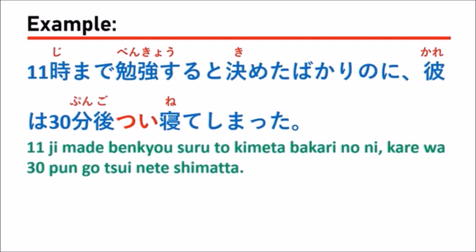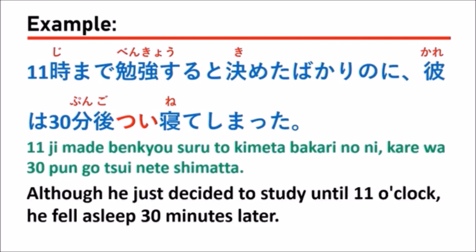The next example: 11時まで勉強すると決めたばかりなのに、彼は30分後つい寝てしまった。 Which means in English: 'Although he just decided to study until 11 o'clock, he fell asleep 30 minutes later.'